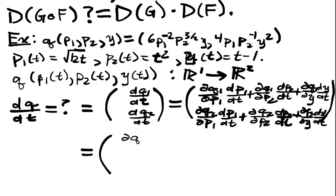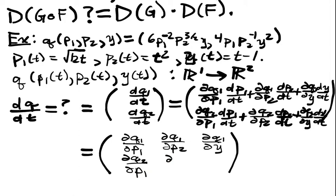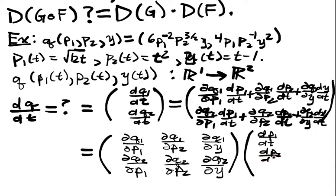And we have the matrix (∂q1/∂p1, ∂q1/∂p2, ∂q1/∂y; ∂q2/∂p1, ∂q2/∂p2, ∂q2/∂y) times the vector (dp1/dt, dp2/dt, dy/dt).